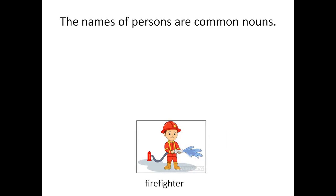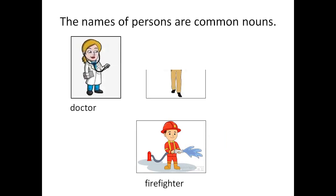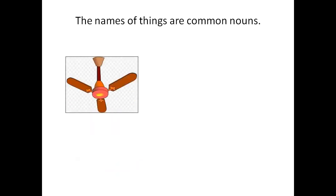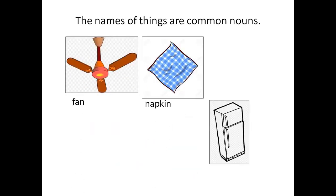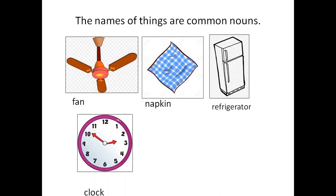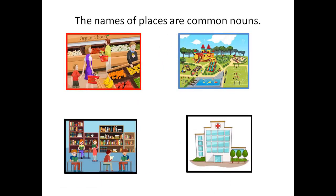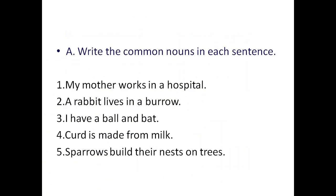The names of persons like firefighter, doctor, policeman and gardener are Common Nouns. The names of things like fan, napkin, refrigerator, clock and table are Common Nouns. We visit different places like market, park, library, hospital — the names of these places are Common Nouns.